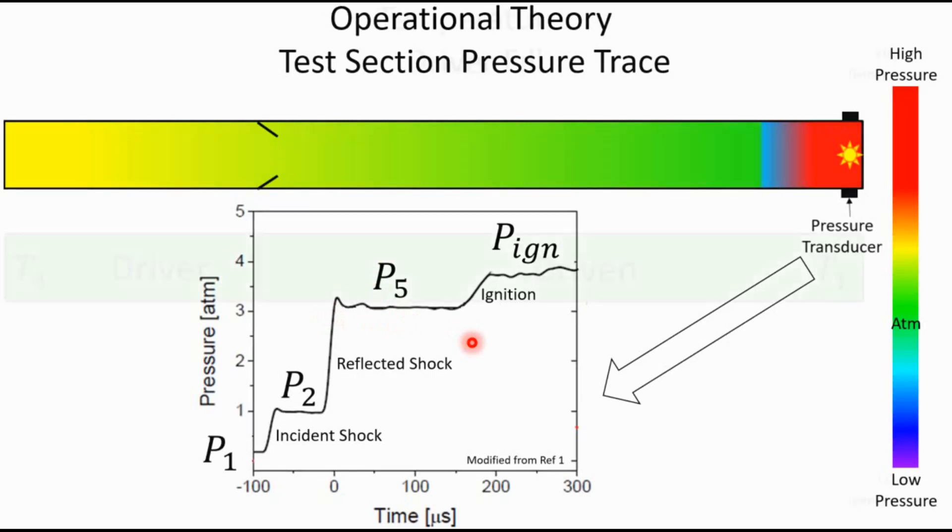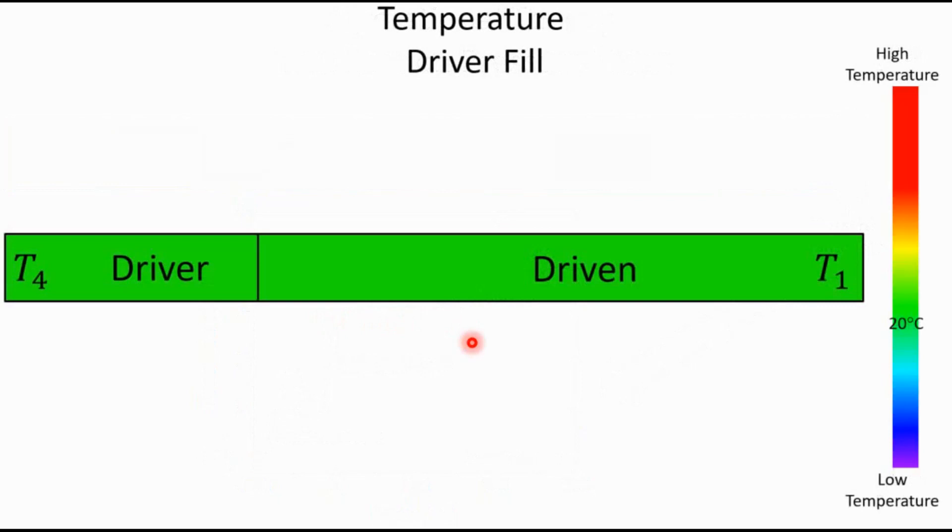So let's back it all the way back up to where the driver is filled and the diaphragm is about to burst, and let's look at how temperature changes as we run this shock tube. You'll notice I've maintained the same rainbow color bar here, but now it goes from high temperature in red to low temperature in purple, and I've basically assumed that atmospheric temperature is around 20 degrees C.